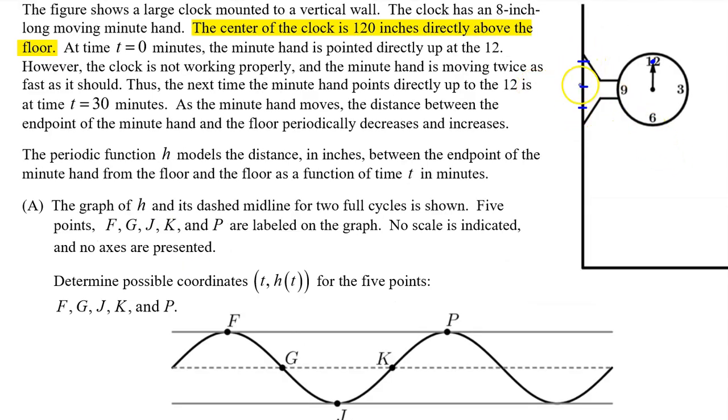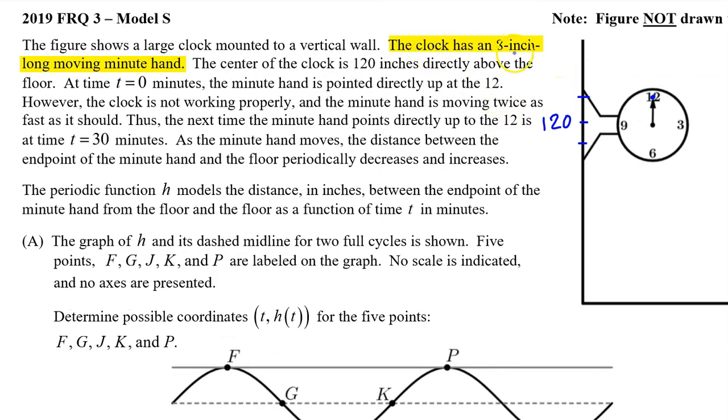Let's start by building a vertical scale. We are told that the center of the clock is 120 inches above the floor. So this mark right here represents the height of the center. So this is 120 inches. The clock has an 8 inch long minute hand. That means the highest point reached by the endpoint of the minute hand will be 8 inches more than the midline. So 128. Similarly, the lowest point reached by the minute hand will be 8 inches below 120. So this will be 112.